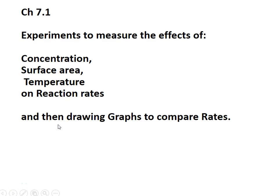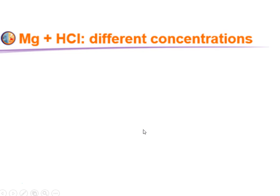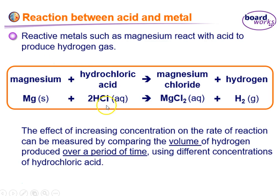This video looks at different experiments and what to measure when examining the effect of concentration, surface area, or temperature on reaction rates, and then drawing graphs from those experiments. The first one looks at concentration, using the reaction between magnesium and hydrochloric acid, measuring the volume of hydrogen produced over a period of time.